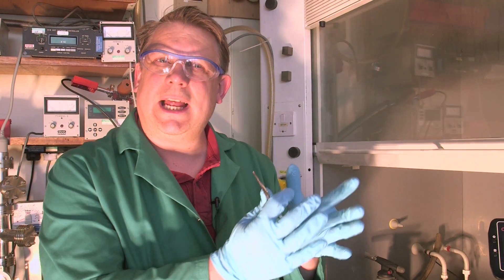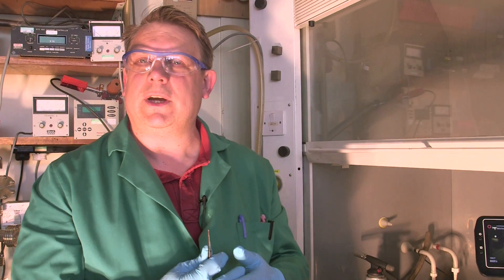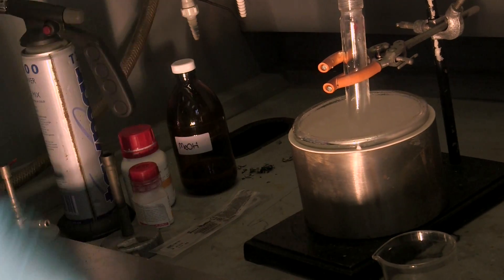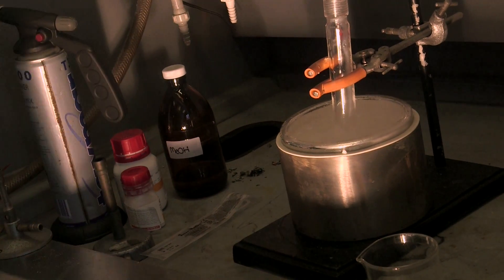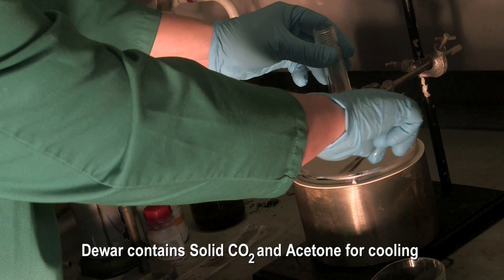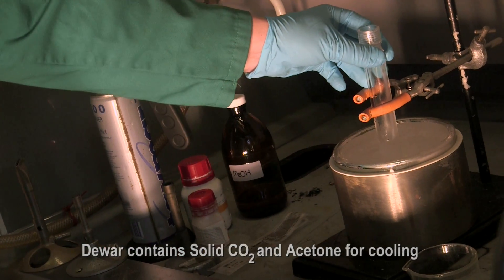That's a really unusual thing in chemistry to have just electrons themselves being solvated. Here we have a dewar, which is just like a thermos flask or something you put your cold drink or hot tea in. And in it we've got some solid CO2, dry ice, and acetone.